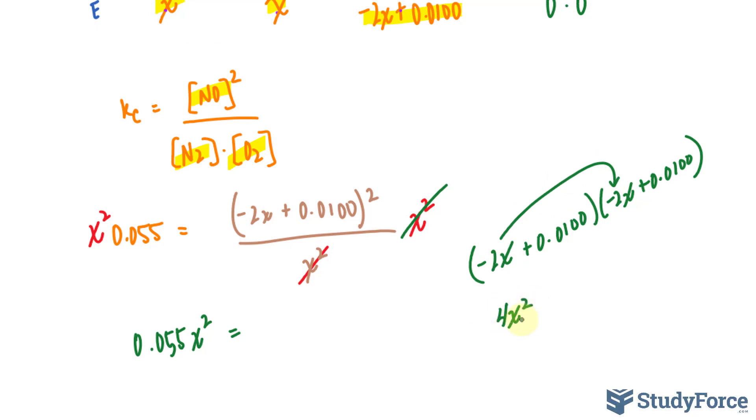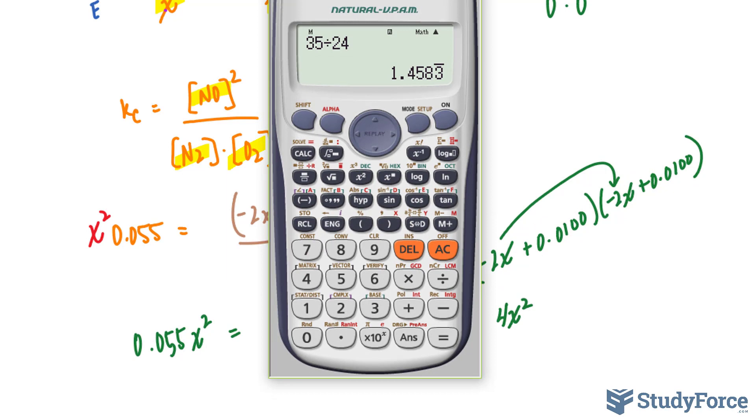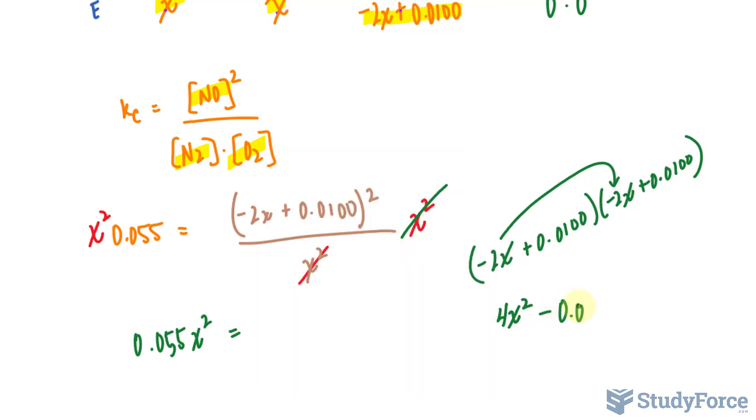So negative 2X times negative 2X gives us positive 4X squared. You want to be very careful with your calculation here. Negative 2 times 0.0100. Watch. Negative 2 times 0.0100 gives us negative 0.02. And also don't forget the X. Then we have the same calculation here. These can be combined. And I'll do that shortly.